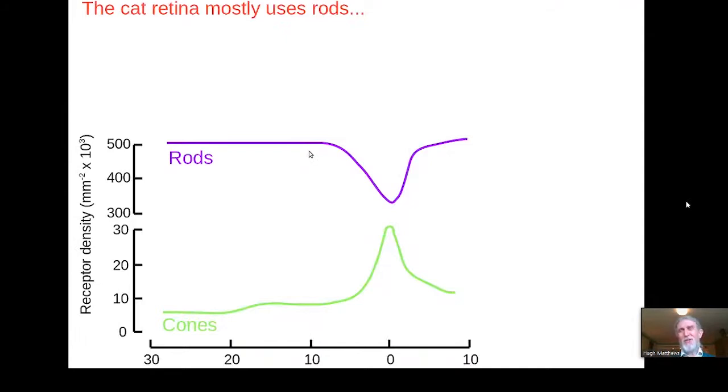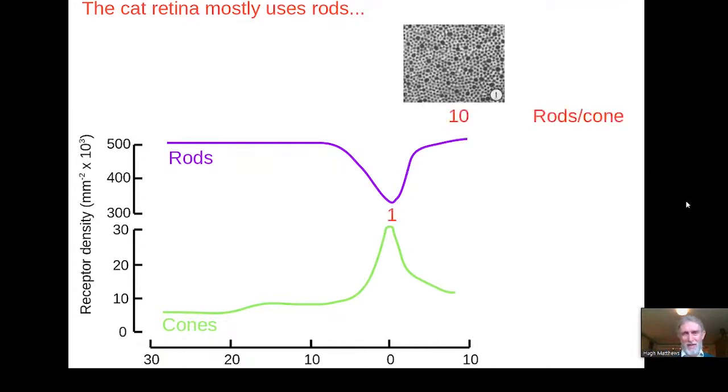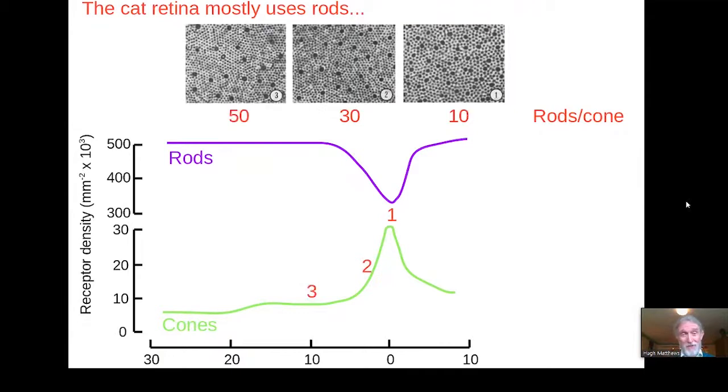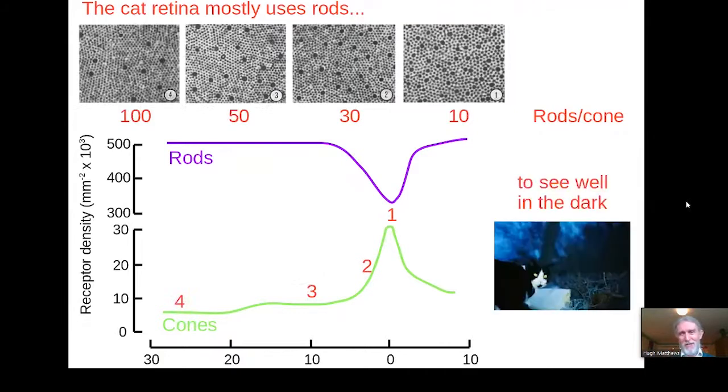Now, let's contrast the human with the cat. Cats hunt at night. My cat certainly hunts at night and occasionally brings little offerings back to place on the doorstep for the next morning. And the cat retina mostly uses rods. There are an enormous number of rods in the cat retina, even in its very central region, position one, and rather few cones. Perhaps even in this central region, 10 rods for each cone. And as we move more peripherally and the cone density falls away, the ratio of rods per cone becomes even larger. And that means that the cat can see very well in the dark because it has highly sensitive rods at all locations within its retina.